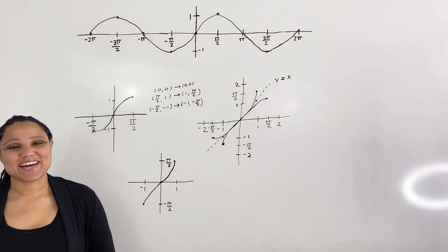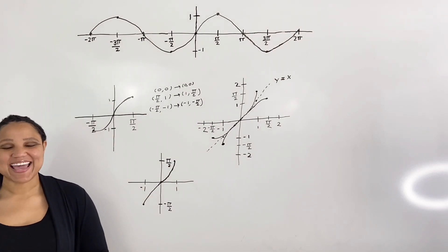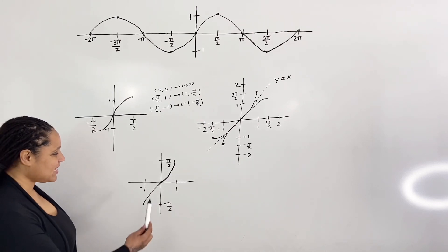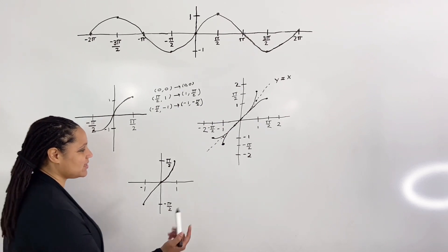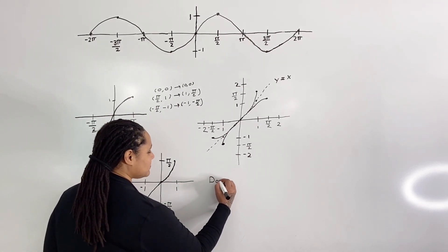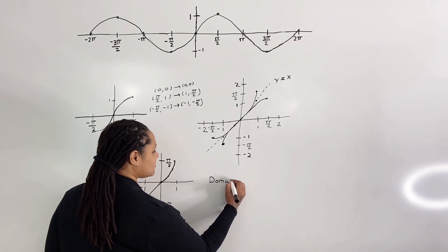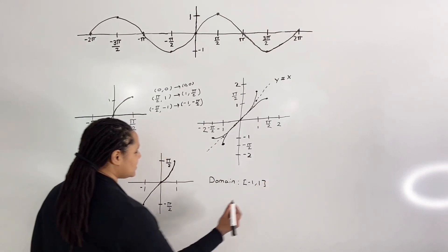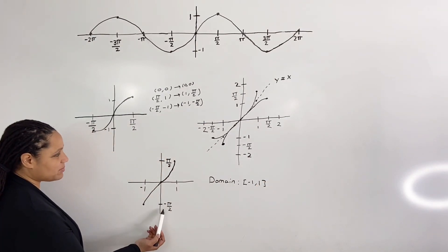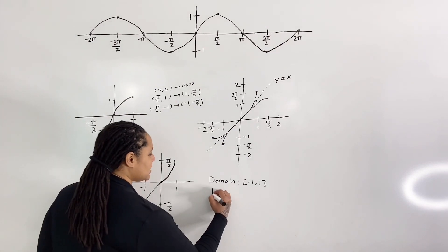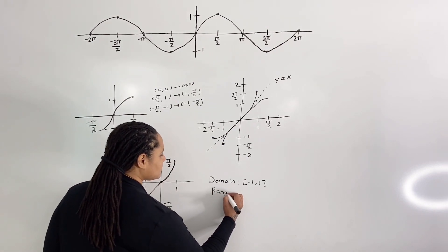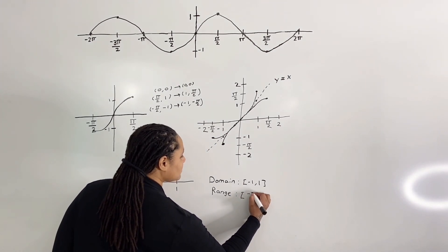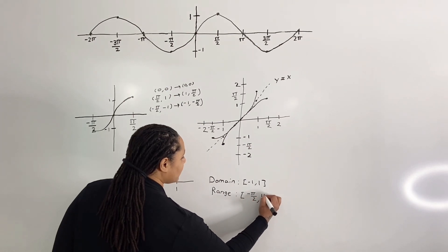Now it is easy to identify the domain and range of inverse sine. The domain of inverse sine is from negative one to one. The range is from negative pi over two to pi over two.